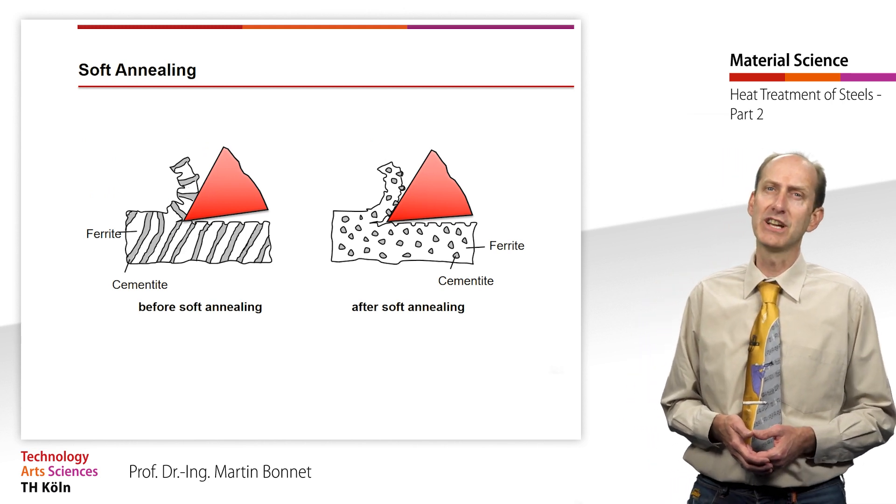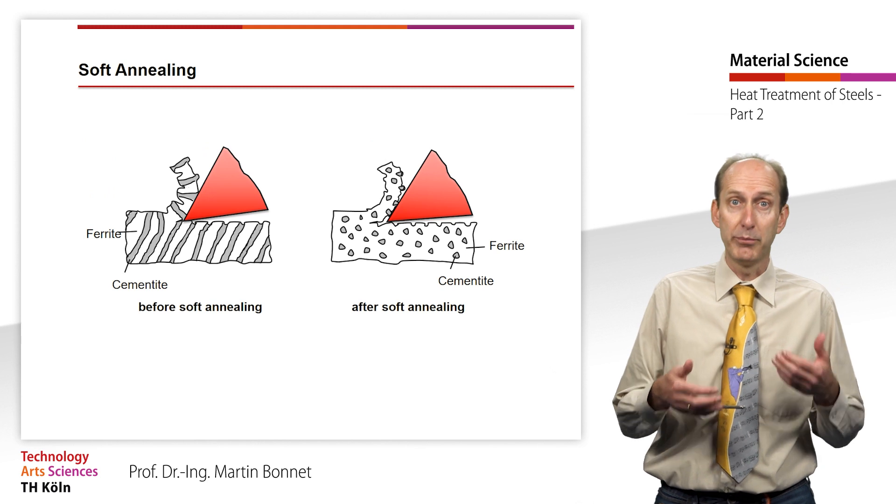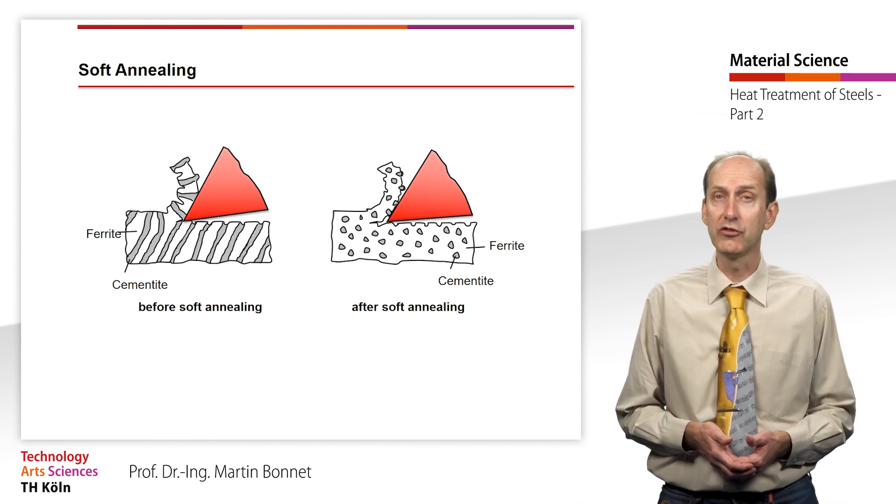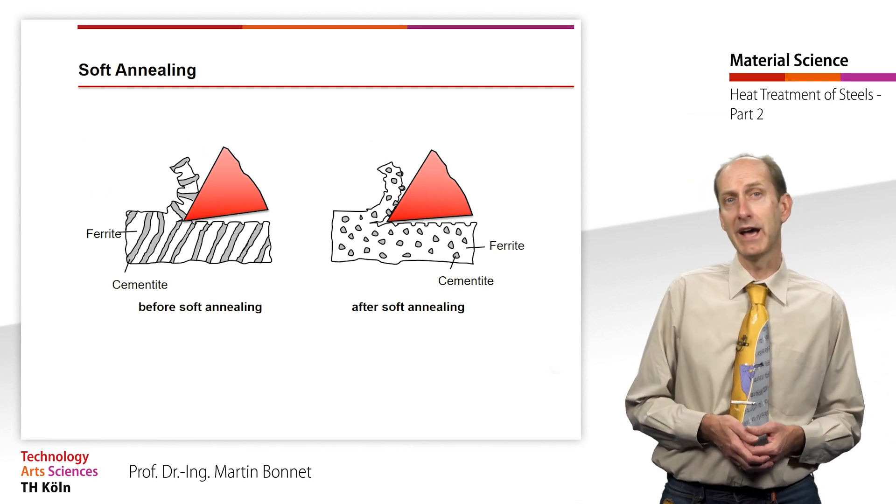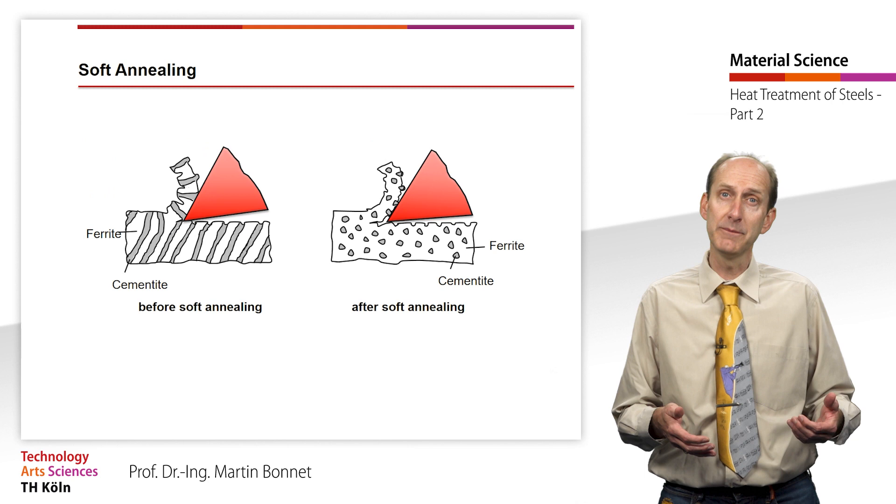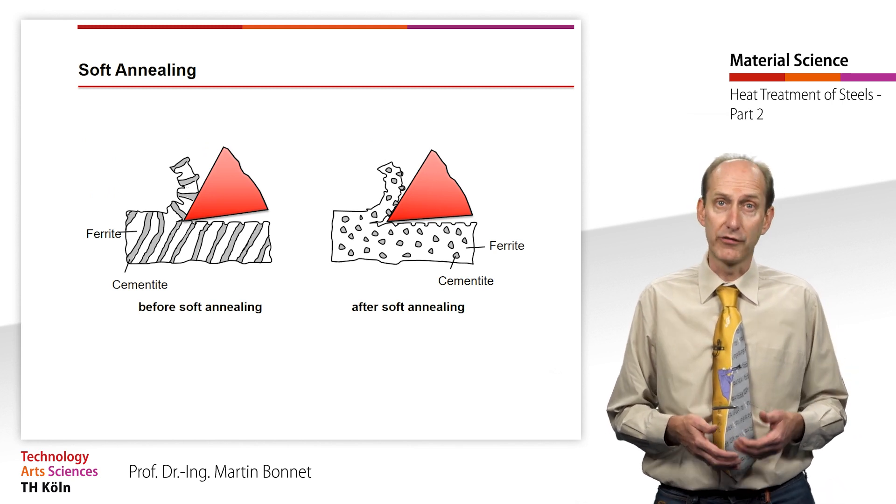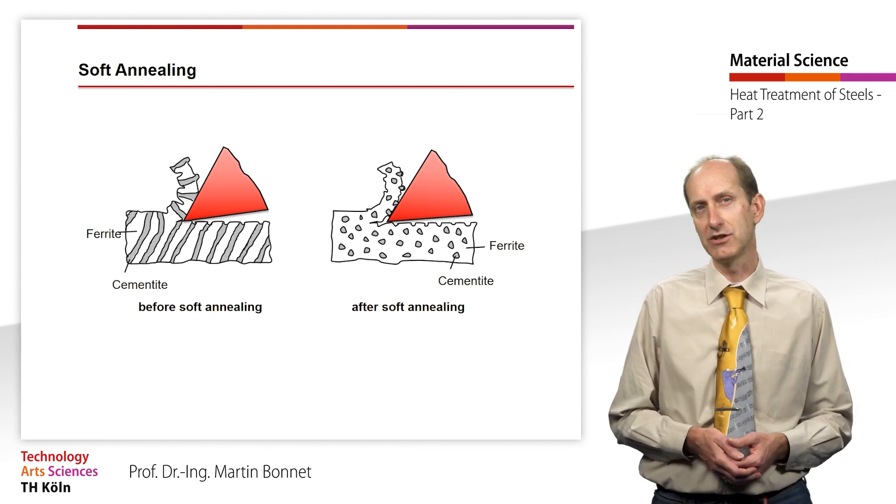During annealing just below the PSK line, the lamella in the perlite are transformed into small grains due to surface tension. The annealing time is up to 100 hours. Initially, a network of cracks develops, later the fragments strive for an angular to roundish grain shape.